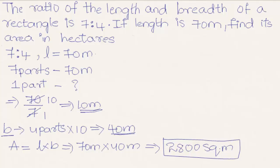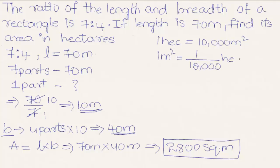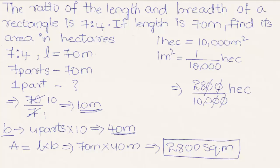Now we have to find the area in hectares. We know that 1 hectare is equal to 10,000 square meters, so 1 square meter equals 1/10,000 hectares. To find the area in hectares, we calculate 2800 divided by 10,000. Cancelling zeros in the numerator and denominator gives 28/100, which equals 0.28 hectares.